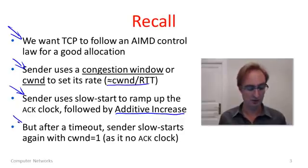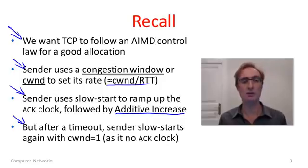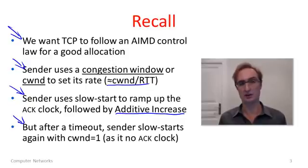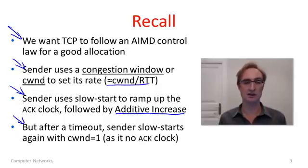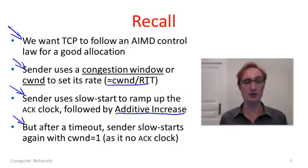The only problem was we detected loss when it finally occurred with a timeout. By that time the ACK clock has run down because timeouts are relatively large compared to the time it takes to ACK a packet. So the sender needed to slow start all the way again. Going all the way back to essentially a congestion window of 1 seems a little extreme — we can do better.